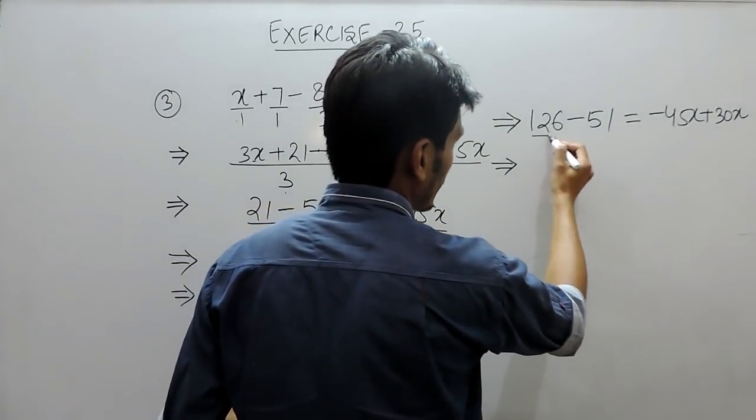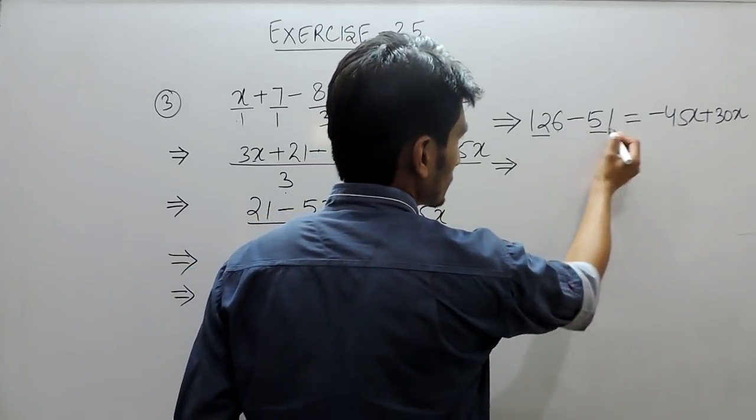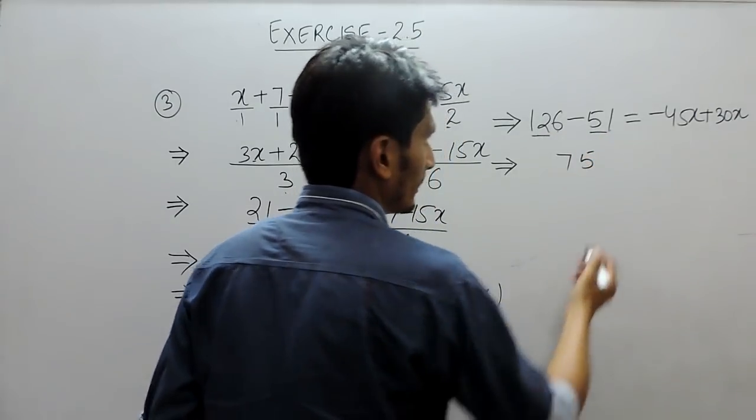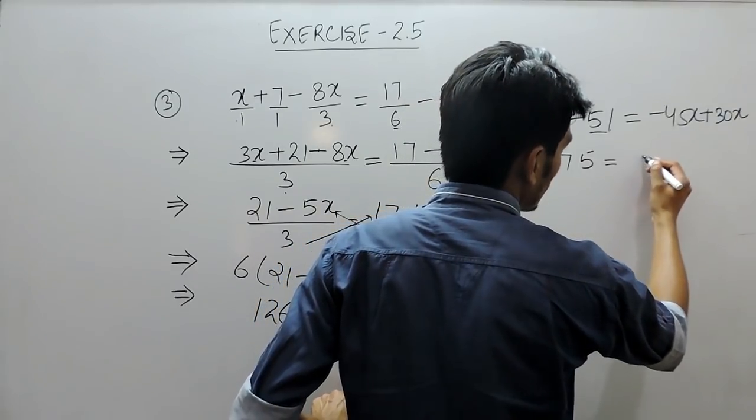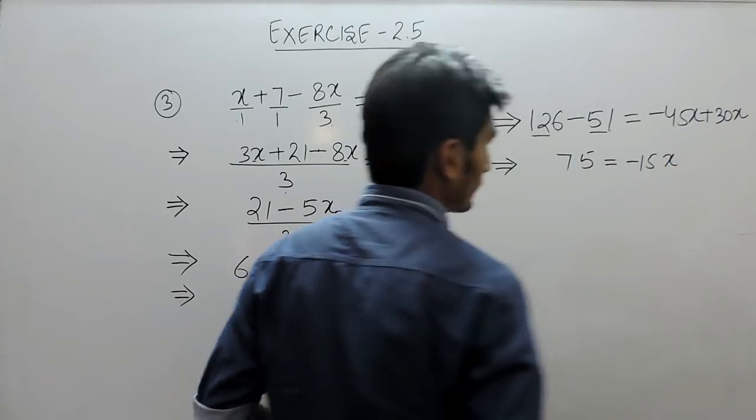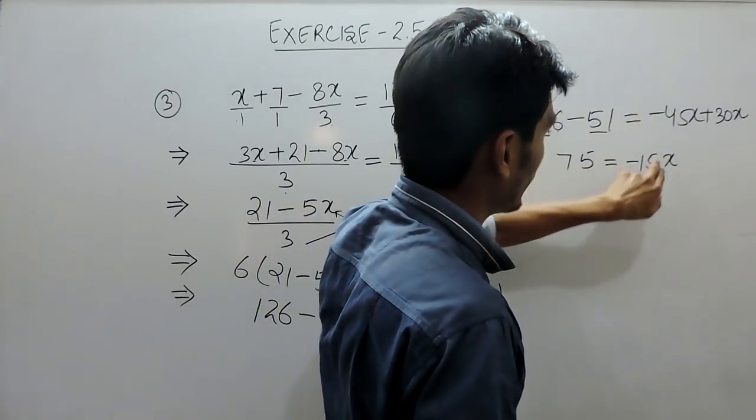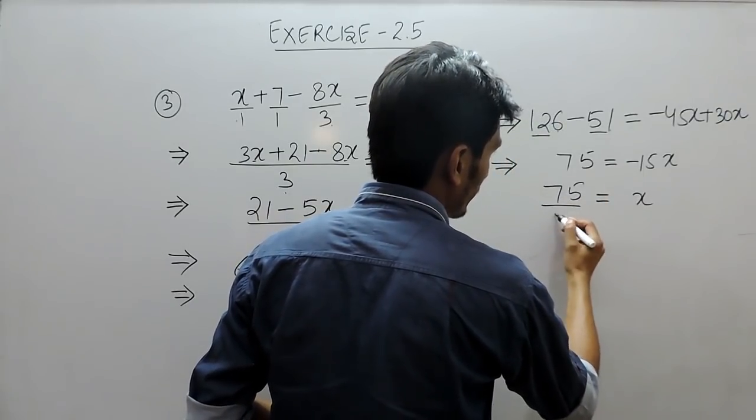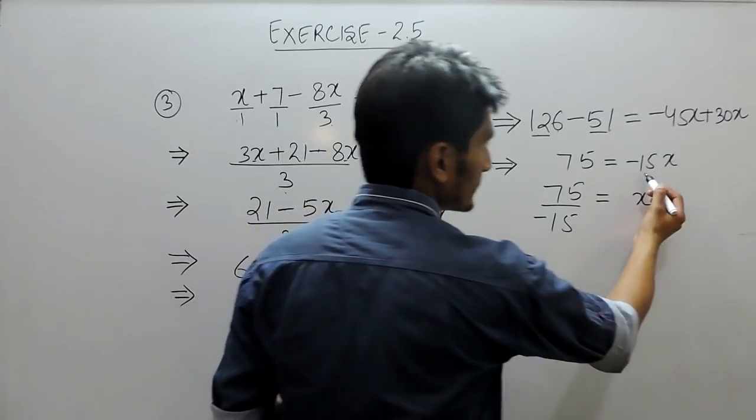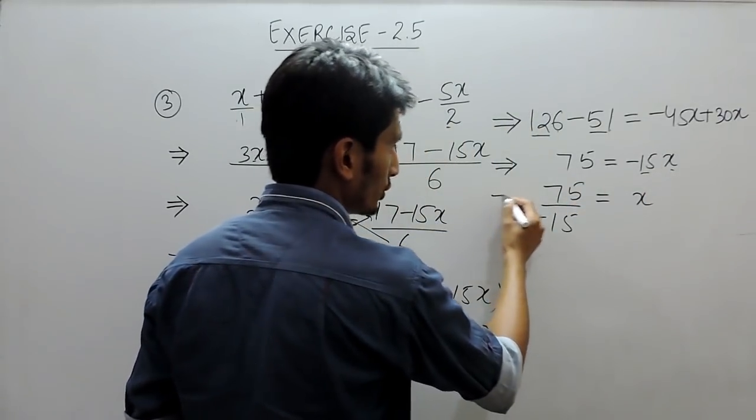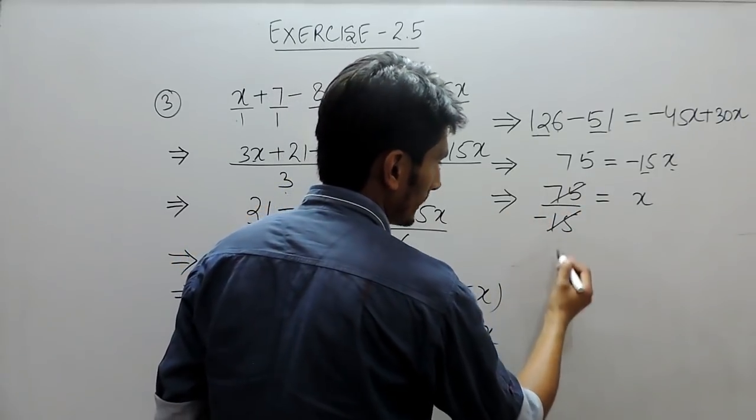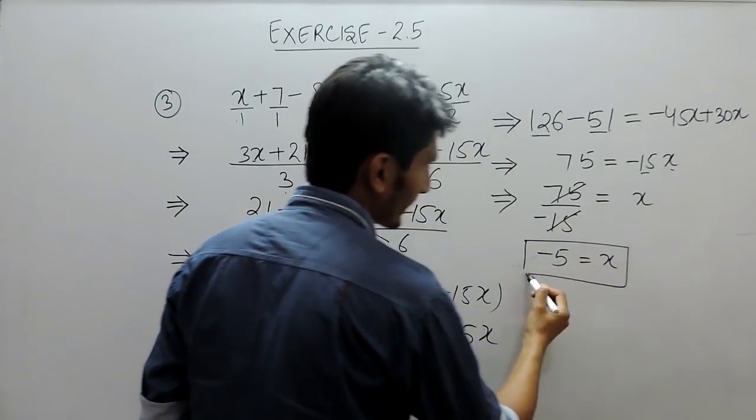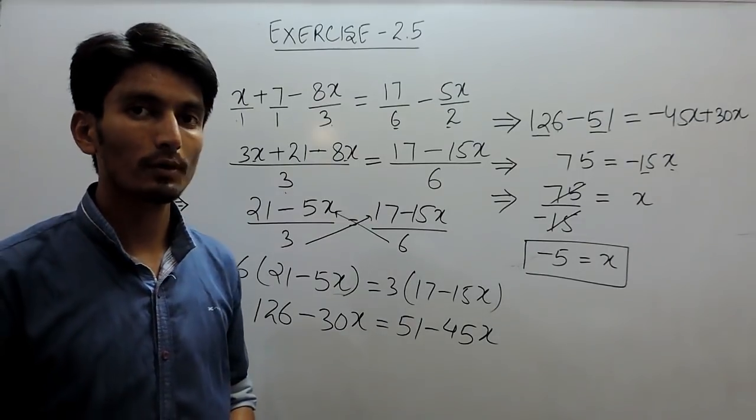So we can solve this. We can subtract 51 from 126. So 6 minus 1 is 5, and 12 minus 5 is 7, which gives 75. And in this case, 45 minus 30 is 15x, and this will be of negative sign because the greater value has a negative sign. So the value of x should be equal to 75 upon minus 15. Because here it is multiplying x, so on this side it should divide 75. This is actually minus 5, because 75 divided by 15 goes 5 times. So the value of x in this case must be equal to minus 5.